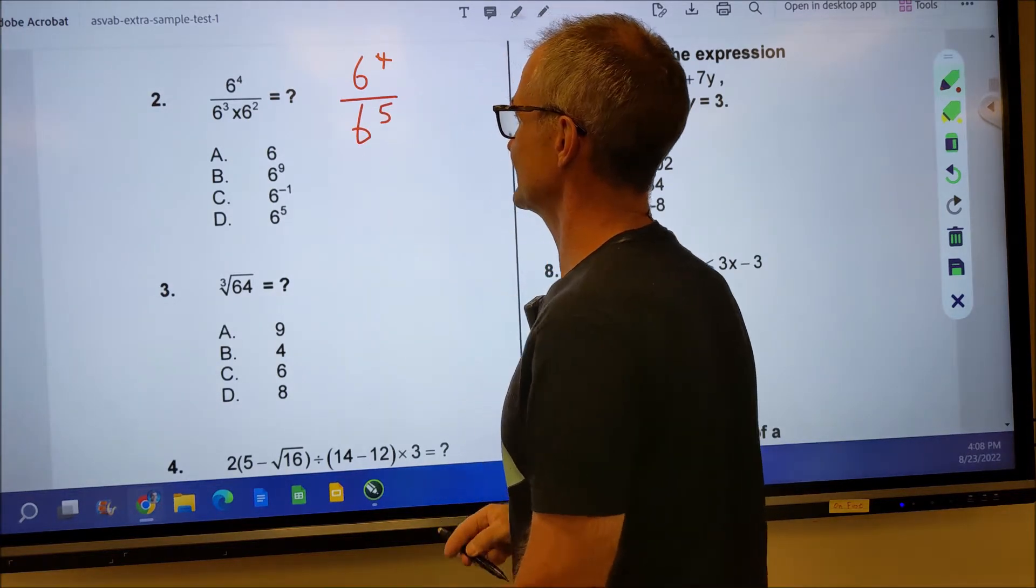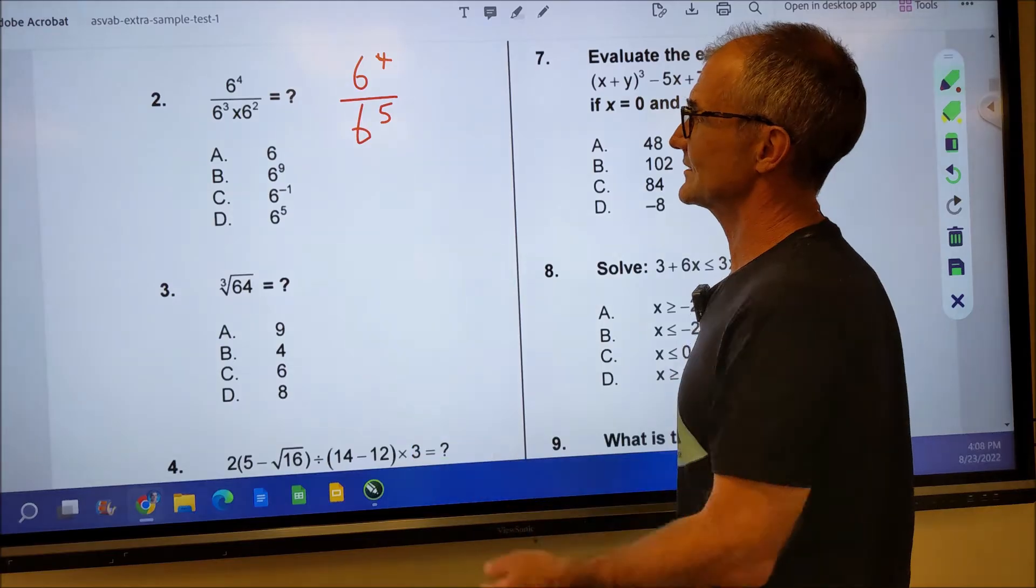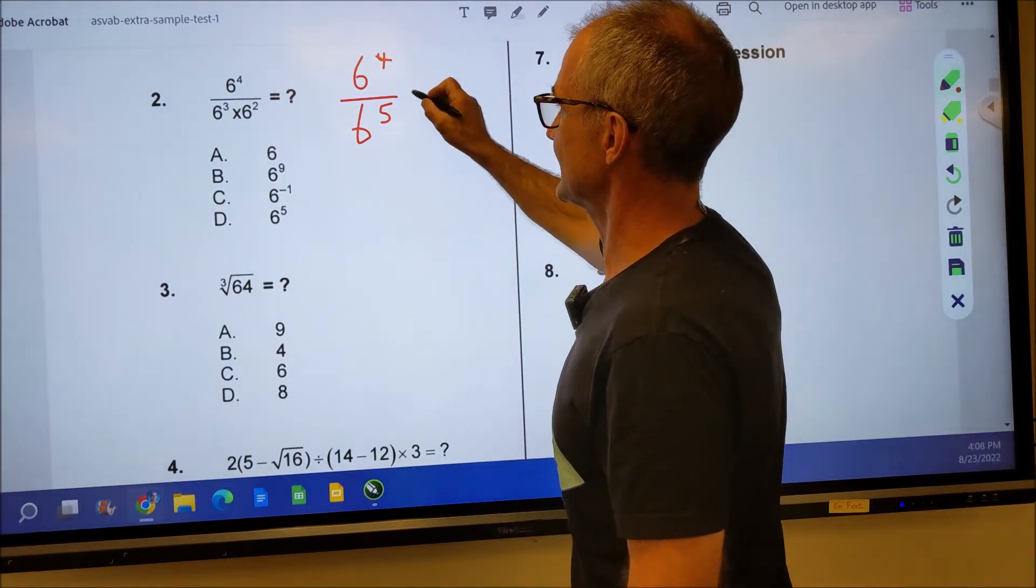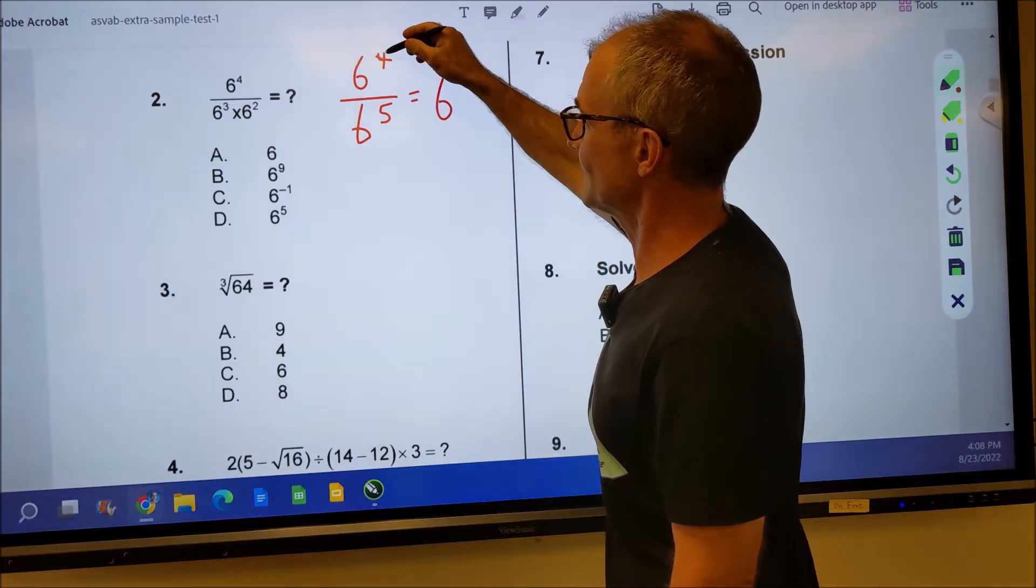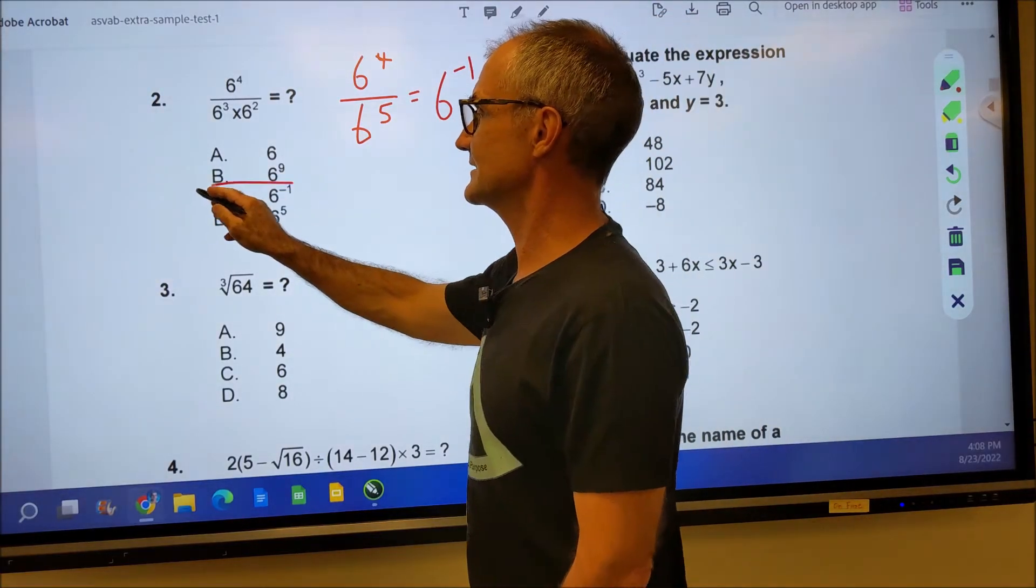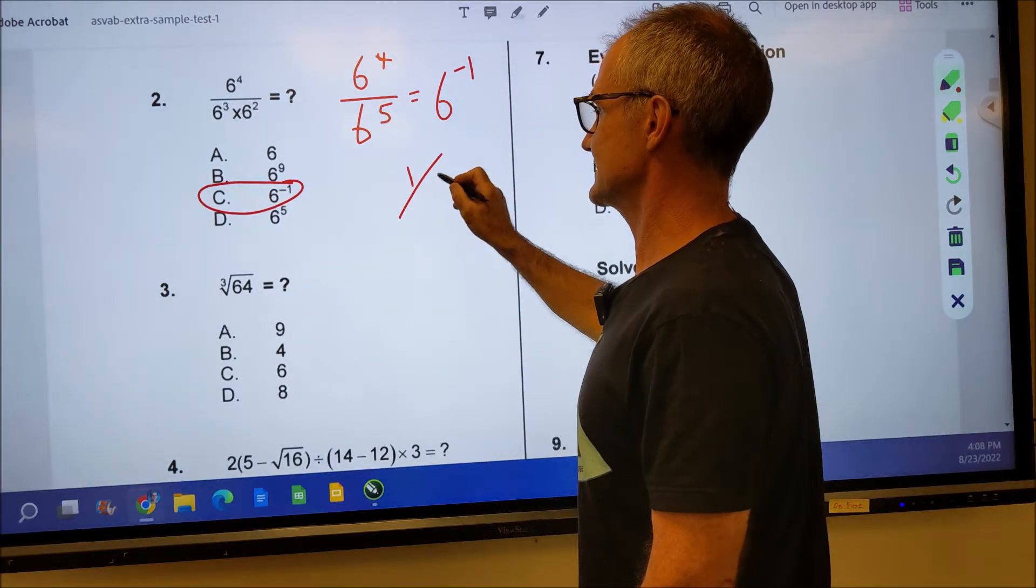So I have 6 to the fifth on the bottom and then the next rule of exponents is you subtract the exponents when the bases are the same. So that gives me 6 to the four minus five, 6 to the negative one and there it is right there. That is also the equivalent of one sixth.